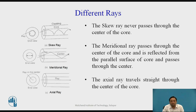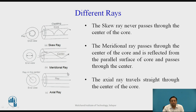We will now see how rays travel inside the core of a fiber optical cable. As shown in the figure, there are three different types of rays that can be transmitted through the optical fiber: skew rays, meridional rays, and axial rays. We will examine the differences between these, starting with the end view.